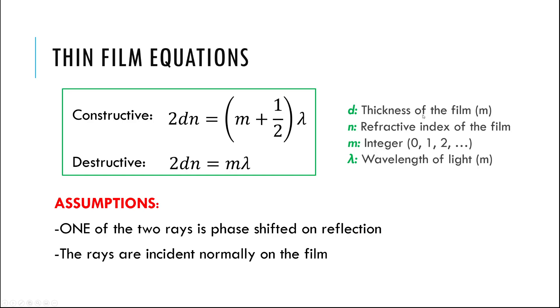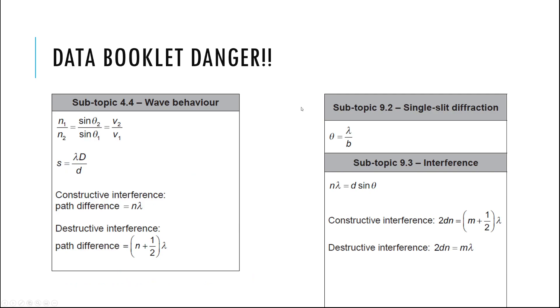Also important: we're assuming rays come in normally — straight up and down — so you don't have to worry about any angles. And be careful: M is the integer in the thin film equations, not N. N is the refractive index.